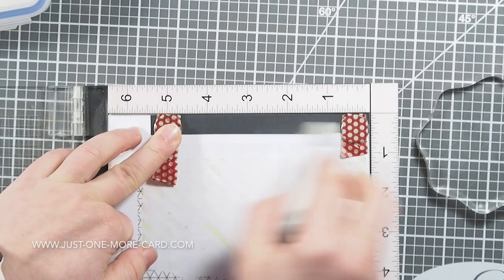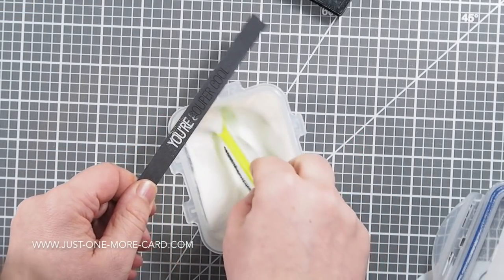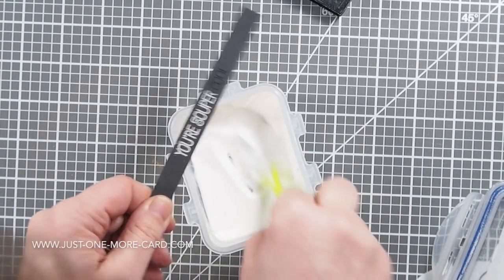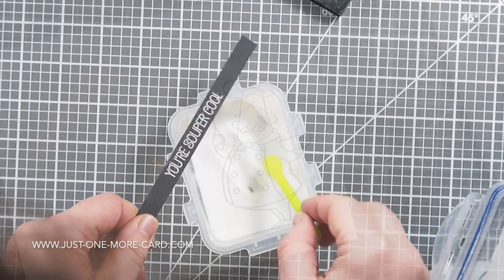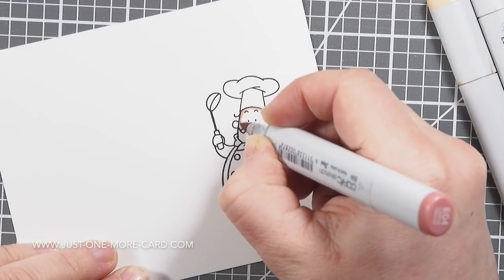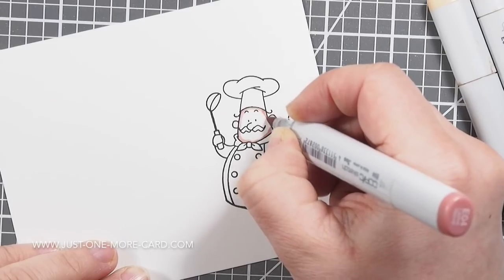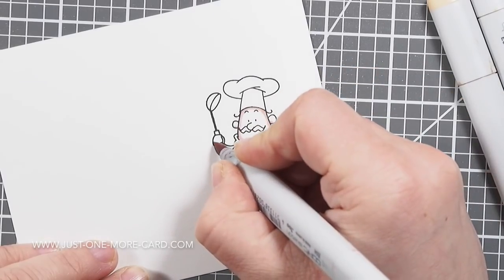Then I'm going to prepare my sentiment, which I'm going to heat emboss with white embossing powder onto black cardstock, as I just wanted to have everything ready, and then I can finally start with my coloring.